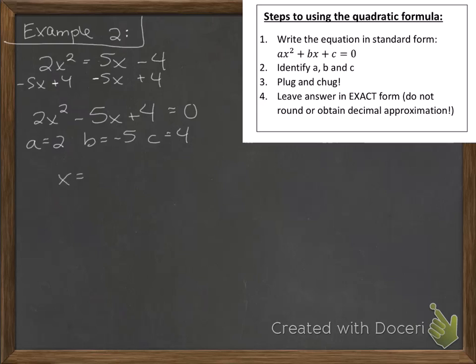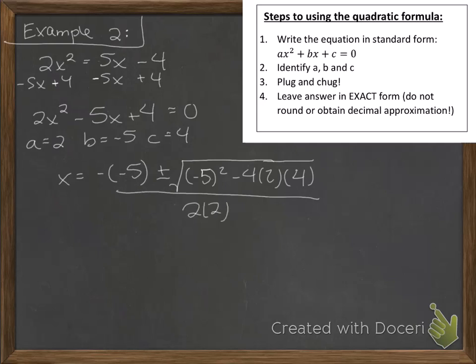Now we can just plug it into the formula. So I have negative negative 5 plus or minus the square root of b squared minus 4 times a times c all over 2a. So we have minus a negative, that becomes plus a positive. So we have positive 5 plus or minus the square root of, well negative 5 quantity squared is positive 25. Then we have 4 times 2 times 4, that is 32. And this is all over 4.